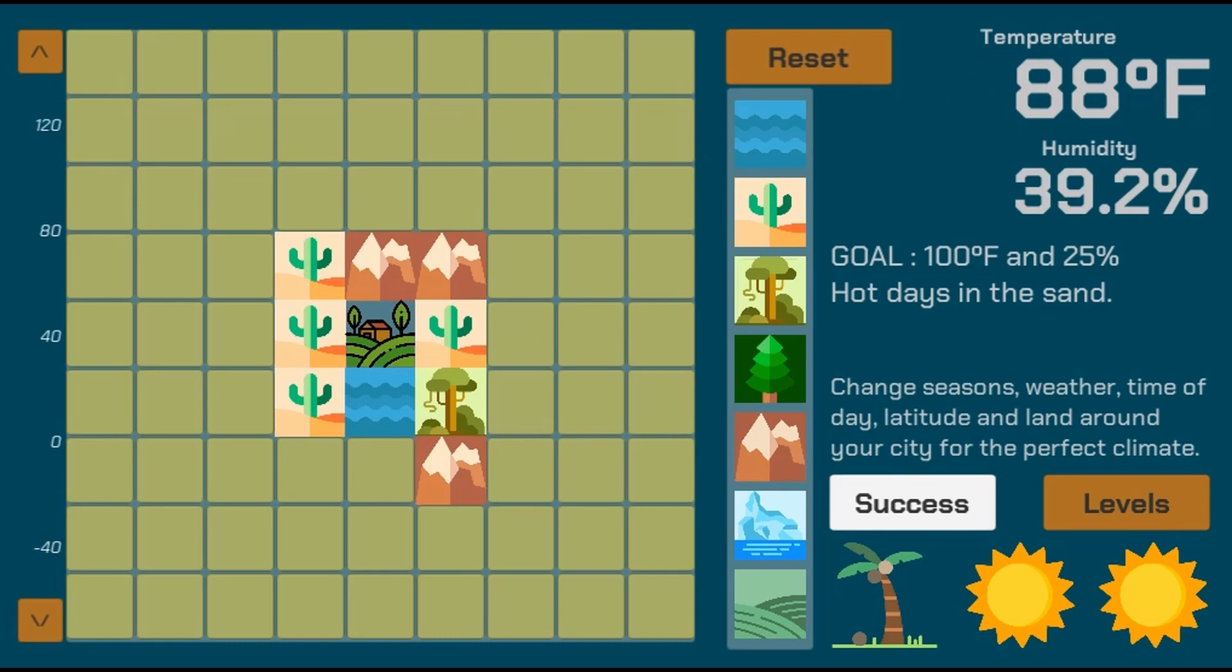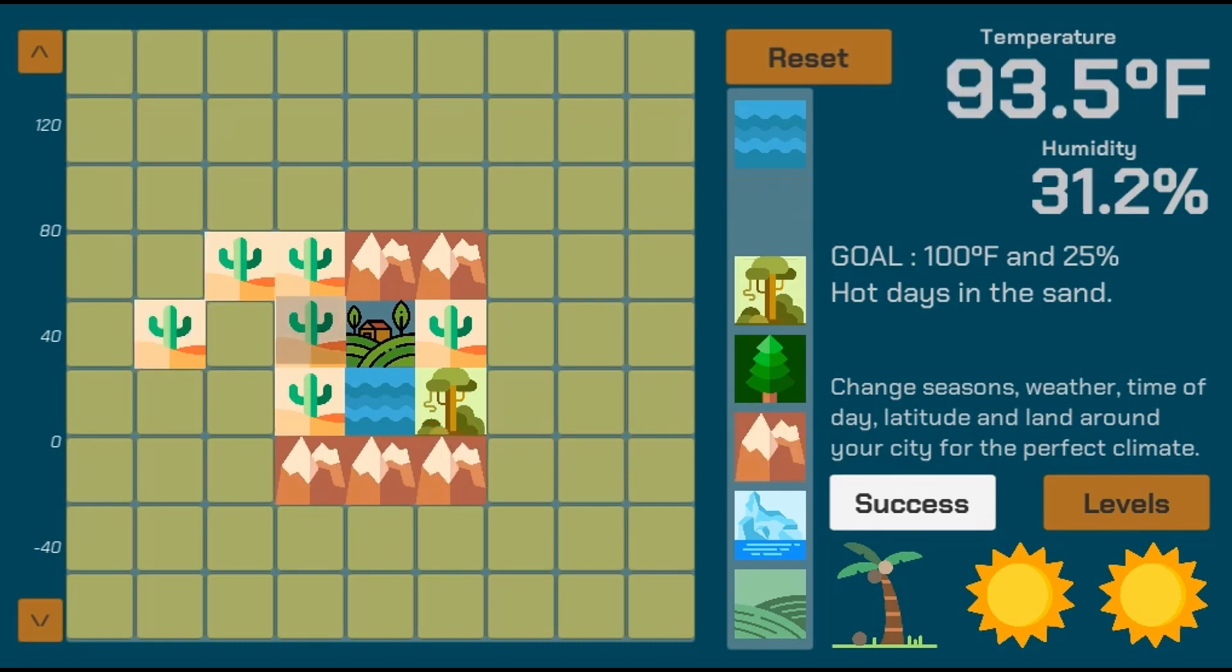You will use the mouse to click to select and drag and drop different images that will change the environments, weather, and climate.